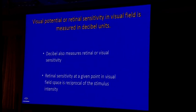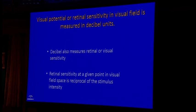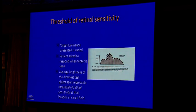Retinal sensitivity at a given point in visual field space is the reciprocal of the stimulus intensity, which is why both are given the same unit. To examine visual field function at a particular point, the target illumination is varied and the patient responds when able to see it. The threshold of retinal sensitivity is defined as the dimmest object illumination that a person can detect at that point.